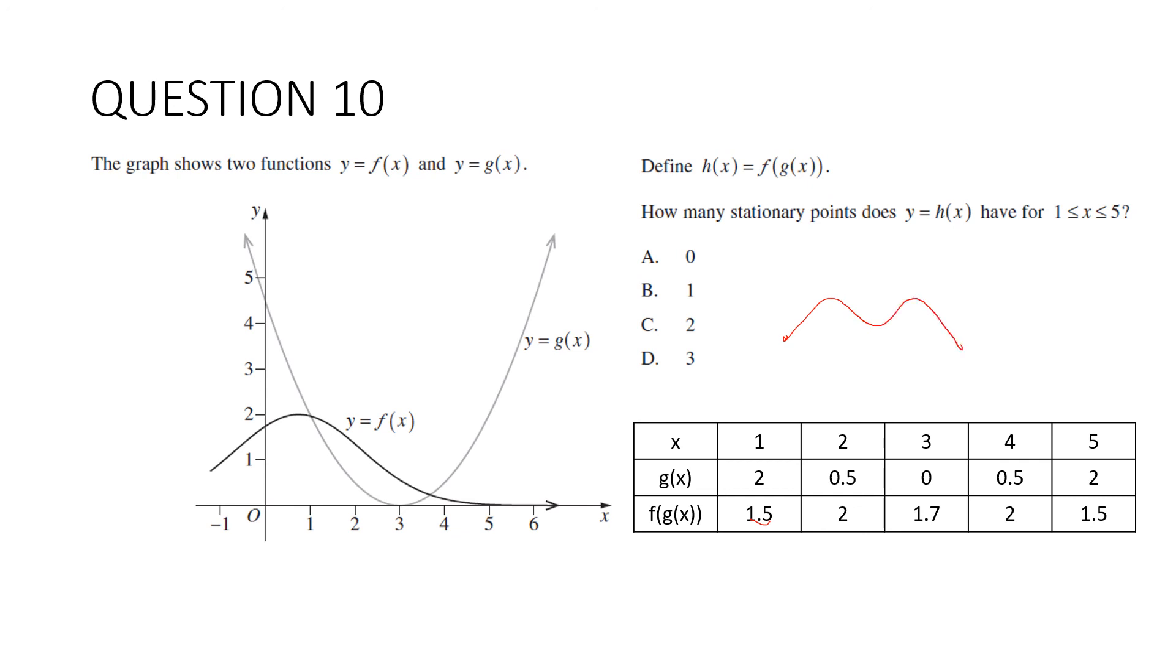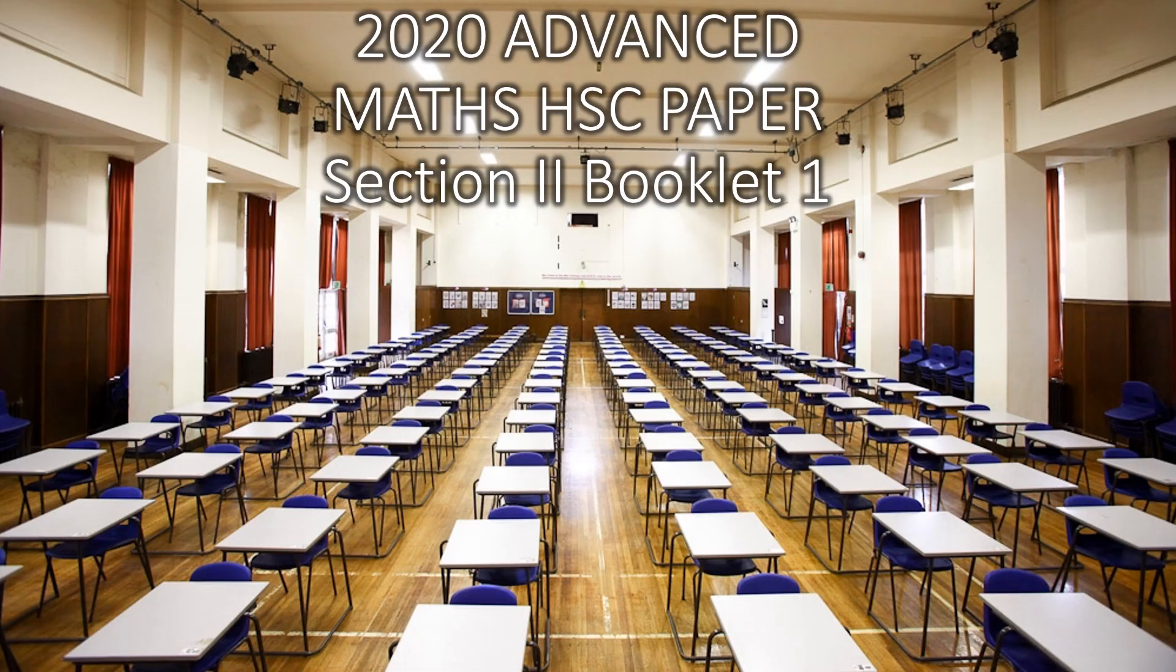A lot of people would have just said that's 2, but remember, turning points are maximums and minimums. So I've got 1, 2, 3. That's the end of the multiple choice. In our next video, we'll look at section 2, booklet 1.